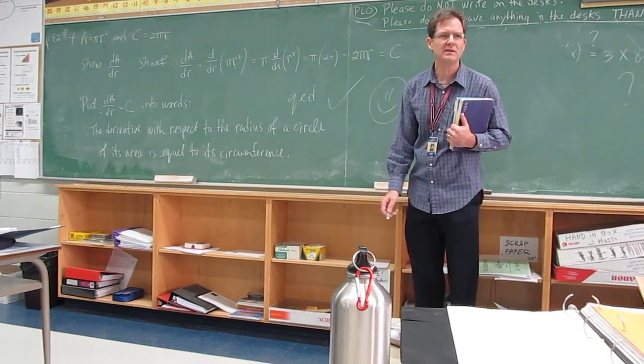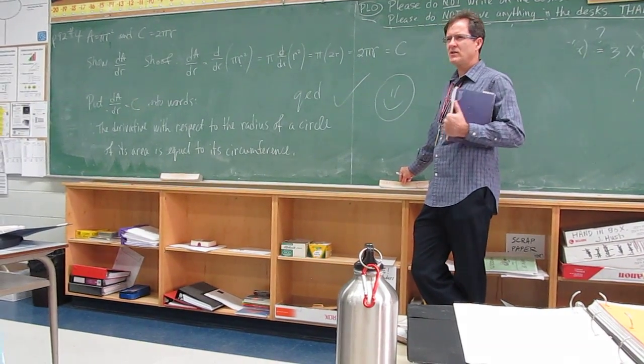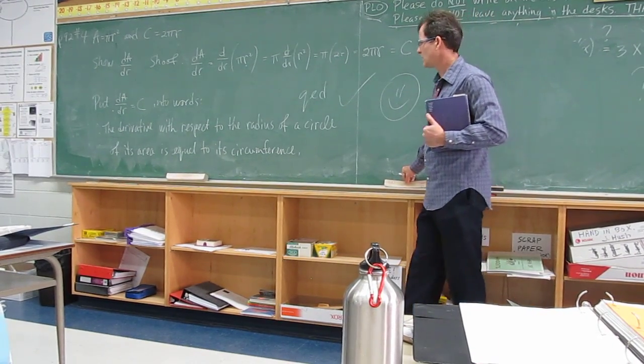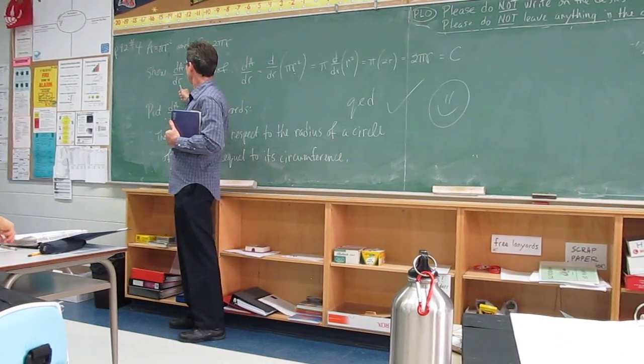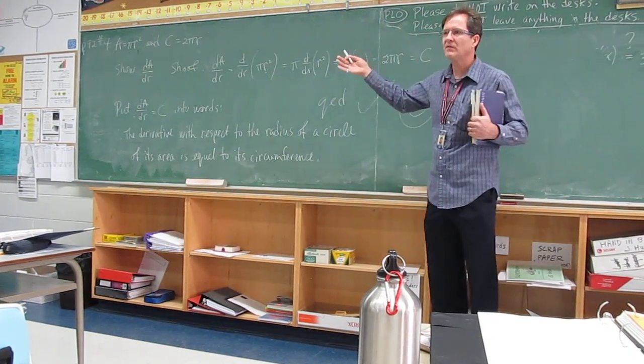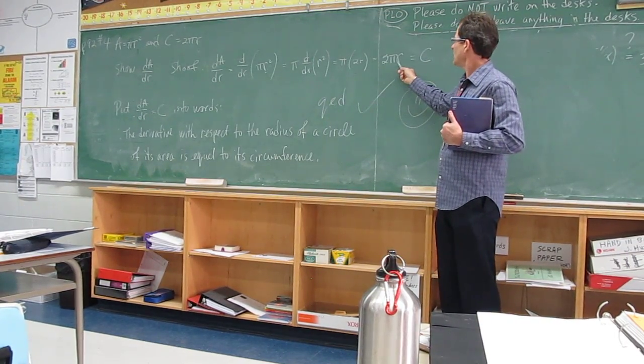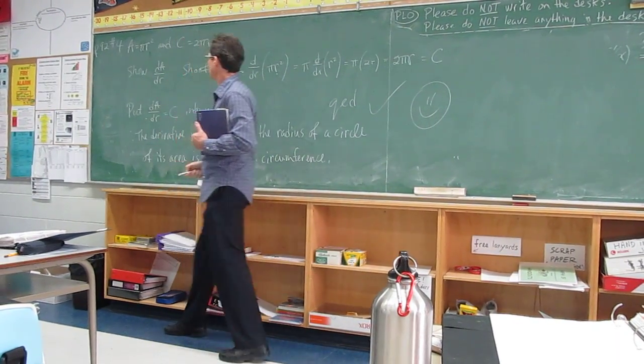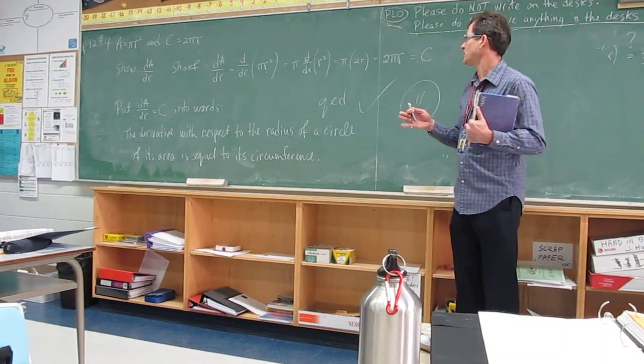Now you might ask, does that make sense? I mean, I proved it. So in that sense, it has to be right. But does it make sense? Just logically or in terms of common sense? Maybe, maybe not. Whether it does or not, it doesn't matter. It's true. The area of a circle is changing at a rate equal to its circumference. So when the radius is 5, let's say, the rate of change is 2 times pi times 5 centimeters. Because this is centimeters squared, that's centimeters. So it would be changing at a rate of that many centimeters. Does that make sense? Maybe not, but that's correct.